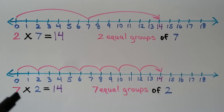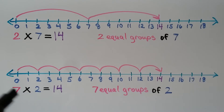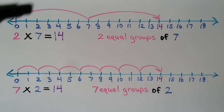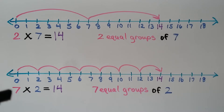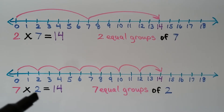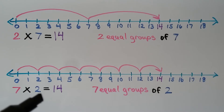On this number line we have seven times two is equal to fourteen. We've switched the numbers around, and look at how the number lines look. This one has two big jumps because it started with a two for the two groups. This one has seven little jumps of two because it's got a seven — that's the number of groups. The pink one is the number of groups, the blue one is how many is in each group. This shows seven equal groups of two.